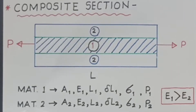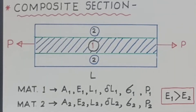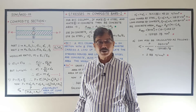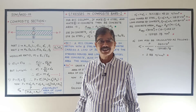Similar quantities exist for material number two: A2 is the cross-sectional area, E2 is the modulus of elasticity, L2 is the length, delta L2 is the deformation, sigma 2 is the stress, and P2 is the load shared. An important hint: you should select material number one as having the greater value of modulus of elasticity, so E1 is greater than E2.